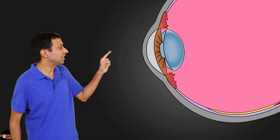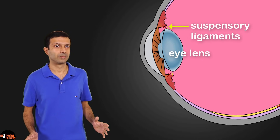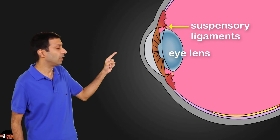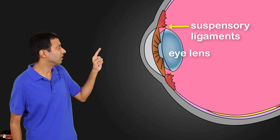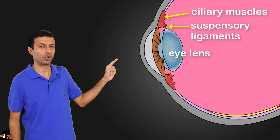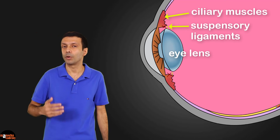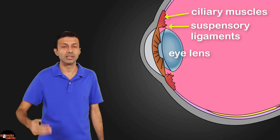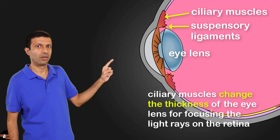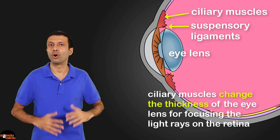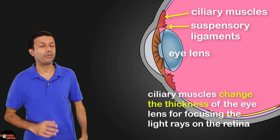The eye lens is held in position by suspensory ligaments. One end of the suspensory ligaments is attached to the eye lens, and the other end is attached to the ciliary muscles. Depending on the distance of the object we are looking at, the ciliary muscles and ligaments change the thickness of the eye lens to focus the light rays on the retina, giving our eye the power of accommodation.